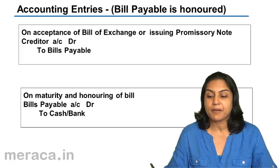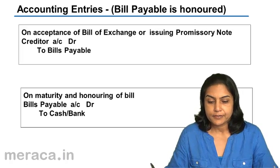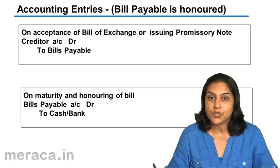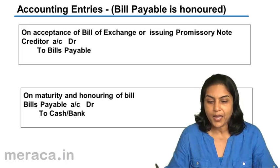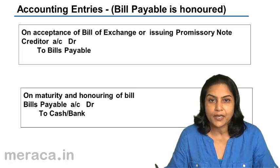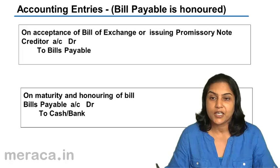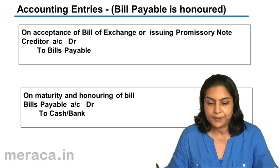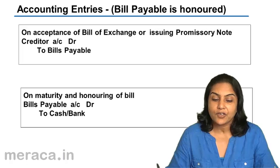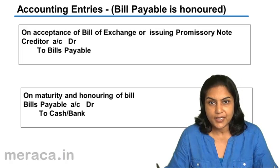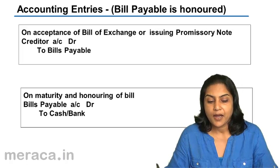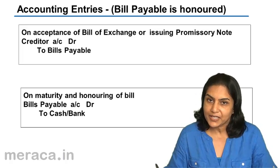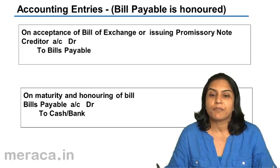Accounting entries — bills payable is honored. We will discuss accounting entries in the books of the person who has made the promise to pay or who has accepted a bill of exchange. In his books, it is a payable and it's recorded as bills payable. Accounting entries arise: one, when he accepts the bill or makes the promise, and two, on maturity.